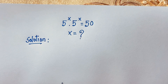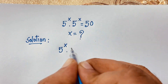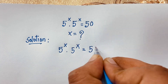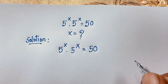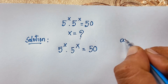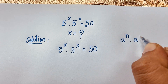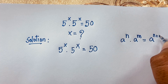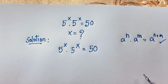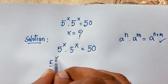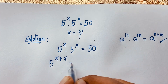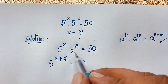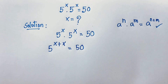5 to the power x times 5 to the power x is equal to 50 — this is our question. Now at this moment you can see easily that a to the power n times a to the power m equals a to the power n plus m. According to this law, I can see easily here 5 to the power x plus x is equal to 50, or equivalently 5 to the power x whole to the power 2, because both bases are the same.